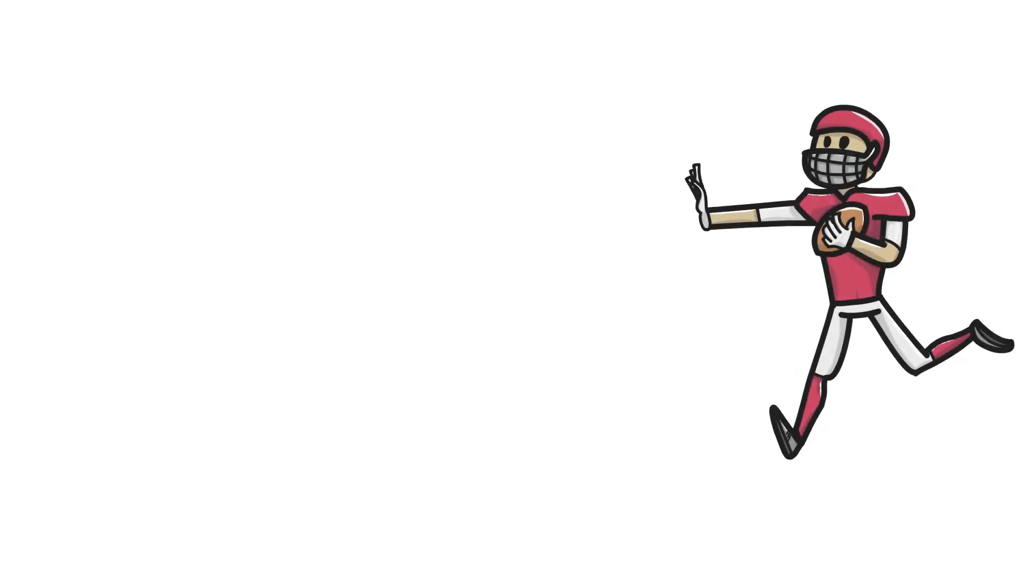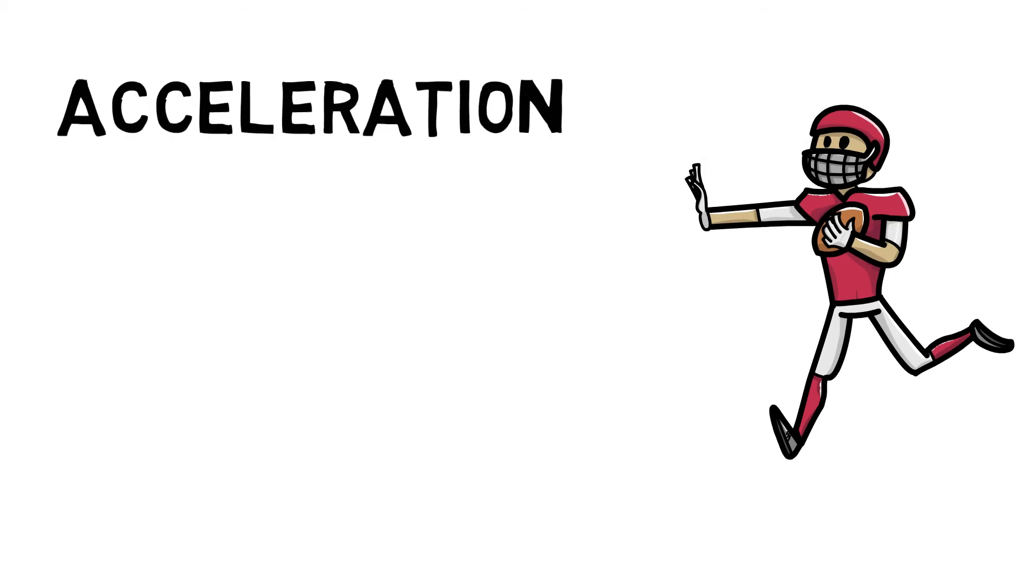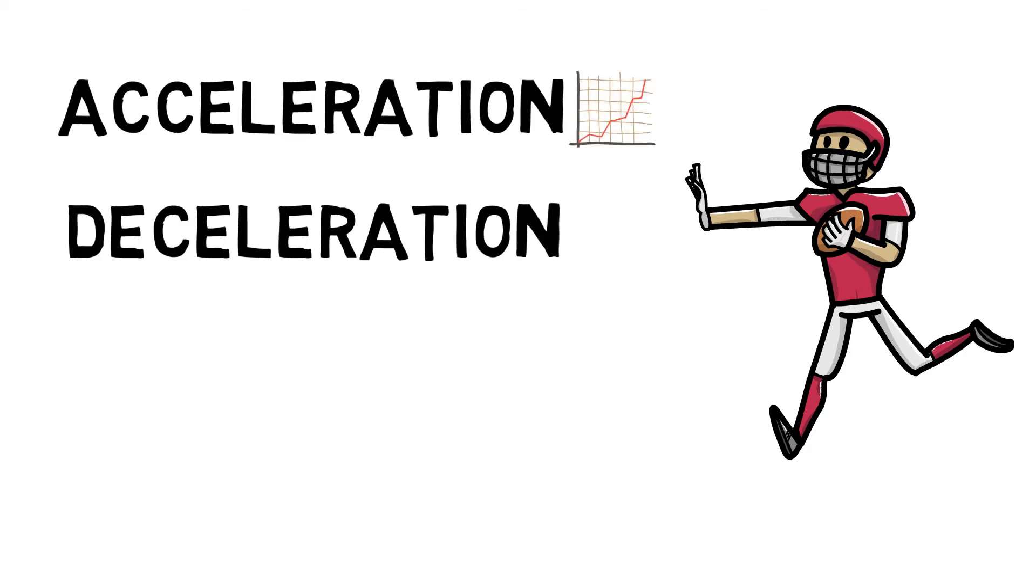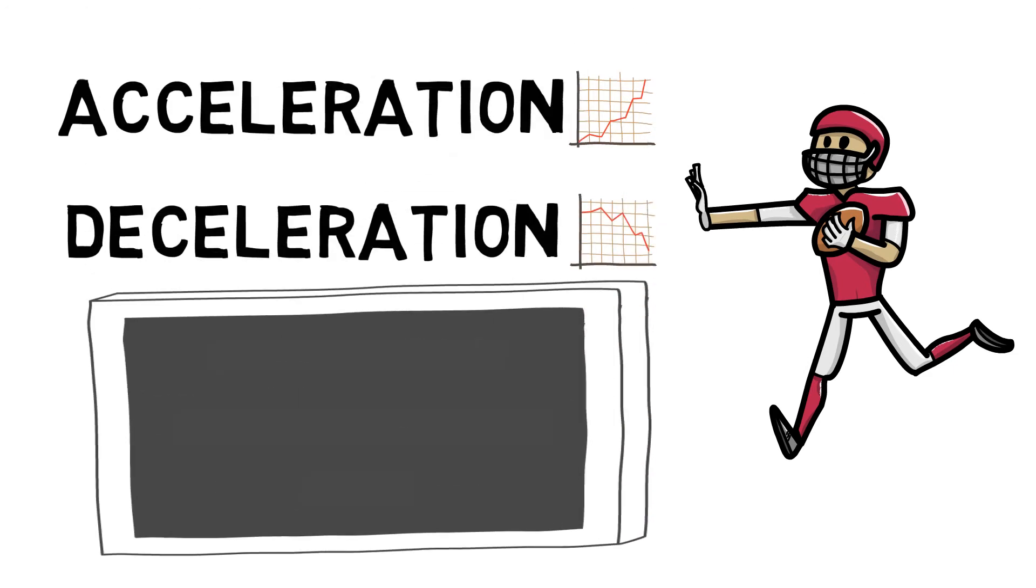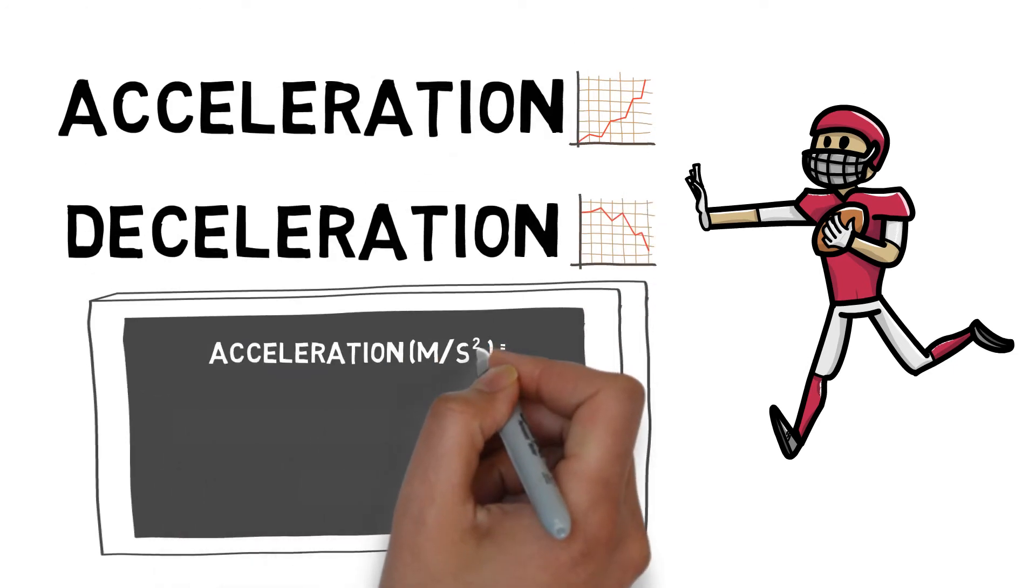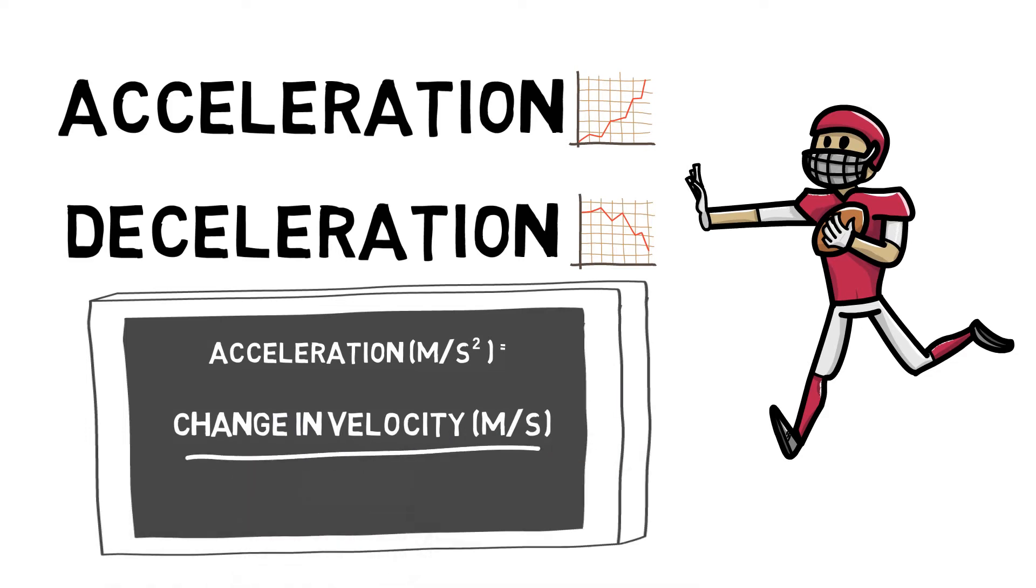If we use our sprinter as an example again, they will not be able to run at the same speed from start to finish. Acceleration is the rate of change of velocity. Deceleration is negative acceleration. Acceleration can be calculated by taking change in velocity over time.